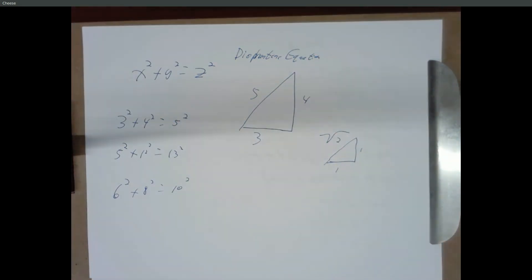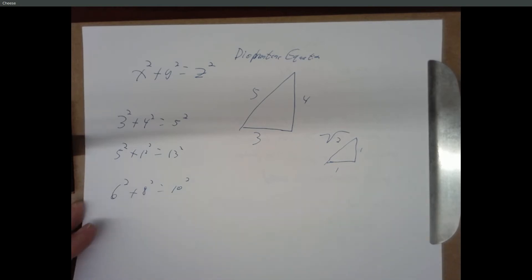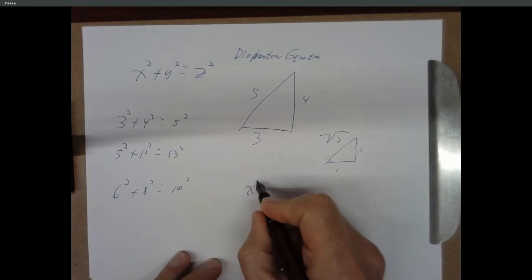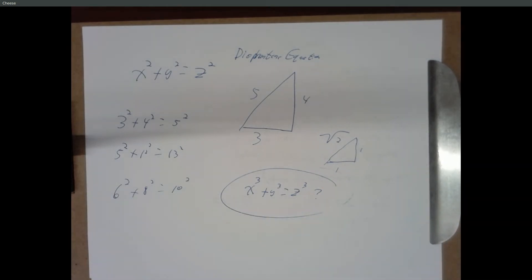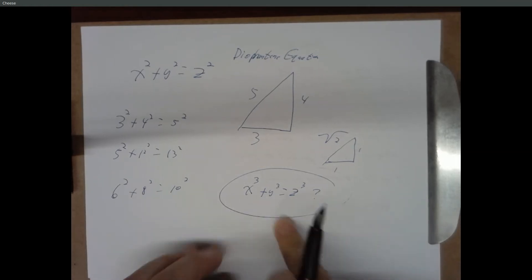Diophantine equations look like plain algebraic equations, but we're asking for a solution in integers. A big question was: is there a way to find integers satisfying x³ + y³ = z³? There are obvious solutions like setting x or y to zero, but those aren't very interesting. The Greeks were never able to find a non-trivial solution to this equation.